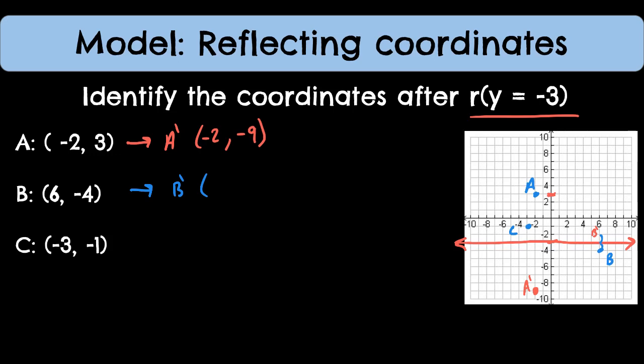Now I can see that my x value isn't changing. The y value is. The question is, what math is happening to go from 3 to negative 9 that is the same process to go from negative 4 to negative 2? Well, let me think about what's happening with this y equals negative 3 line.